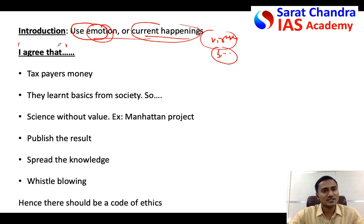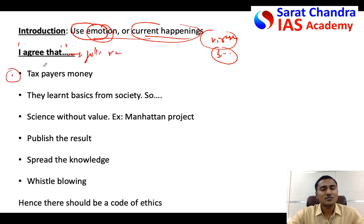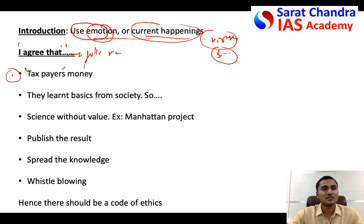Coming to the actual question: yes, I agree the scientific community has an ethical obligation towards society, for the following reasons. First, most scientific research at the government level is funded by taxpayers' money, so it is a responsibility to ensure that innovations are useful to the common public and not harmful to them.